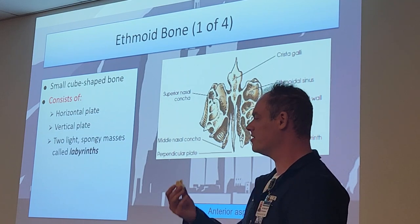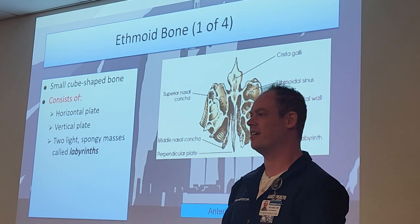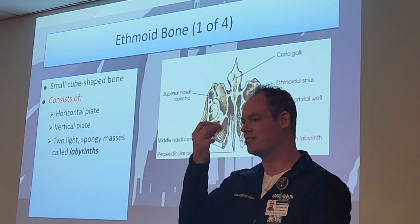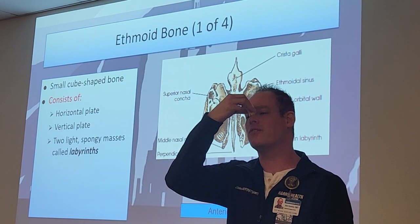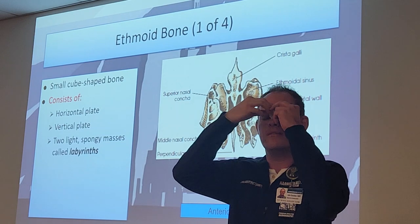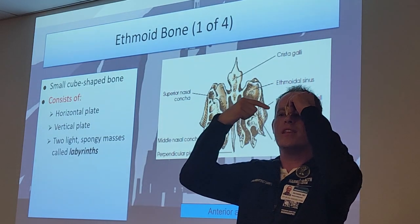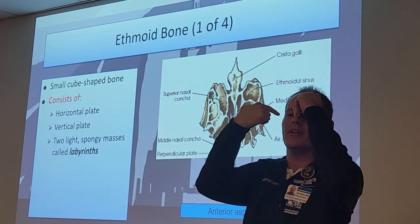So where do you think the ethmoid is located? Right about here - behind the nose.